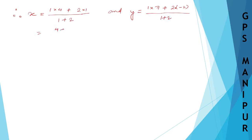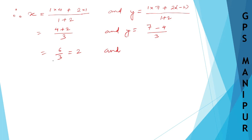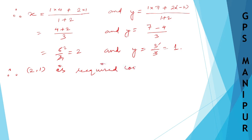Calculating: x = (4 + 2) / 3 = 6/3 = 2. And y = (7 - 4) / 3 = 3/3 = 1. Therefore the required coordinates of the point are (2, 1).